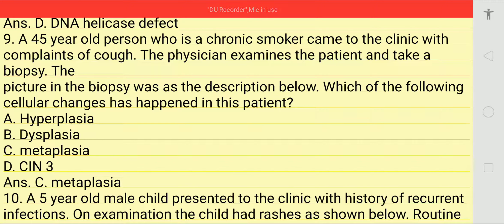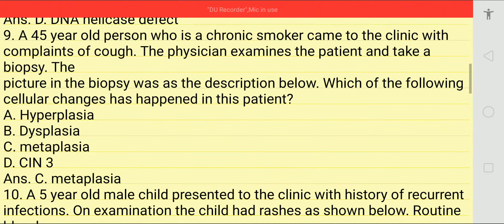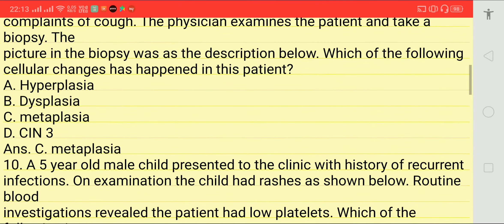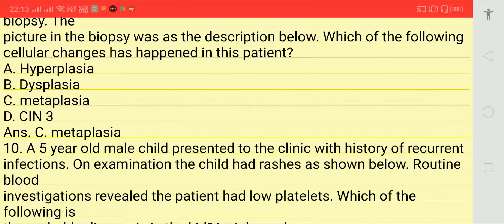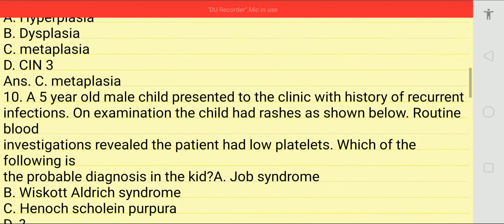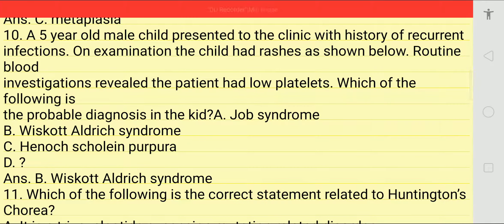Next question: a 45-year-old chronic smoker comes to clinic with complaint of cough. On facial examination, a picture is shown. The biopsy description is given. Which of the following cellular change has happened in this patient? Options: hyperplasia, dysplasia, metaplasia, CIN3. Answer is C — metaplasia.